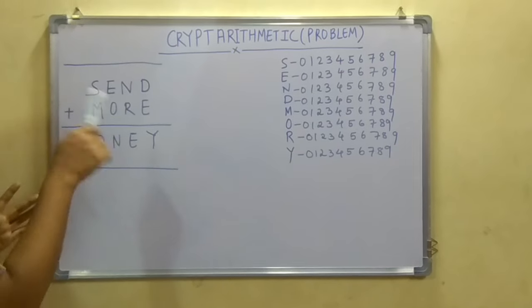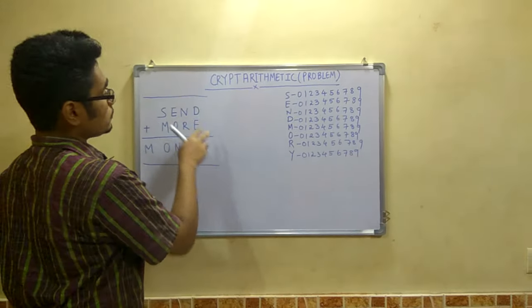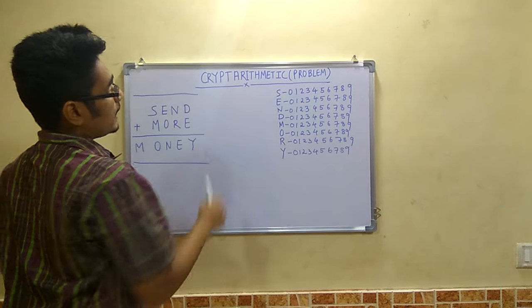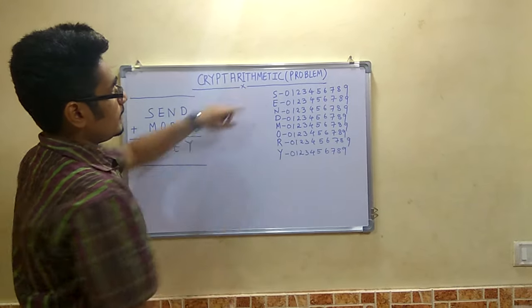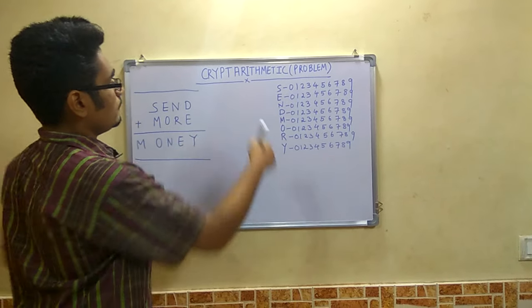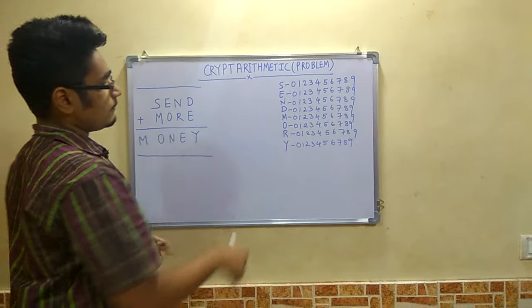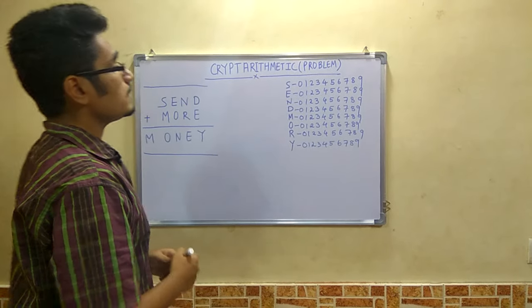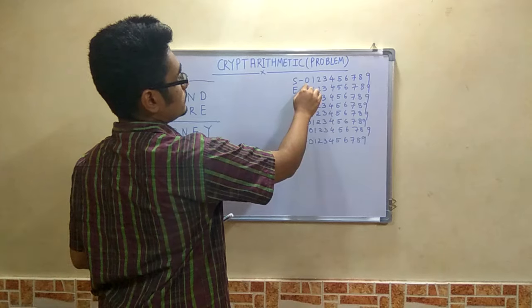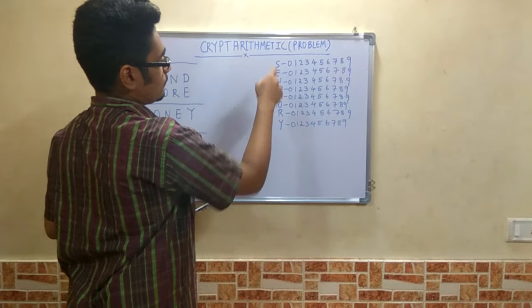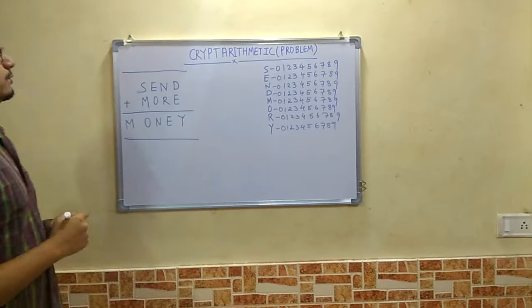So first for doing this we will write each of the alphabets in order, one alphabet at a time. No repetition should be there, like S E N D and M O R Y. We will not repeat the letters which have already come. We will take only one occurrence of each of these letters. And we will assign each of these letters from 0 to 9, like we have done from S to Y. So after you do this.